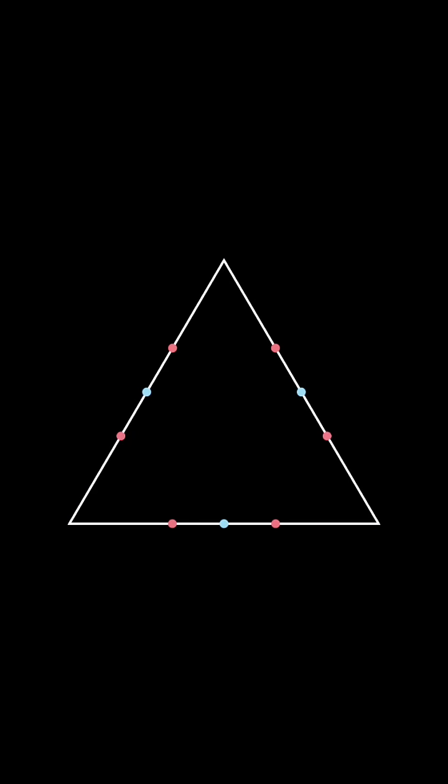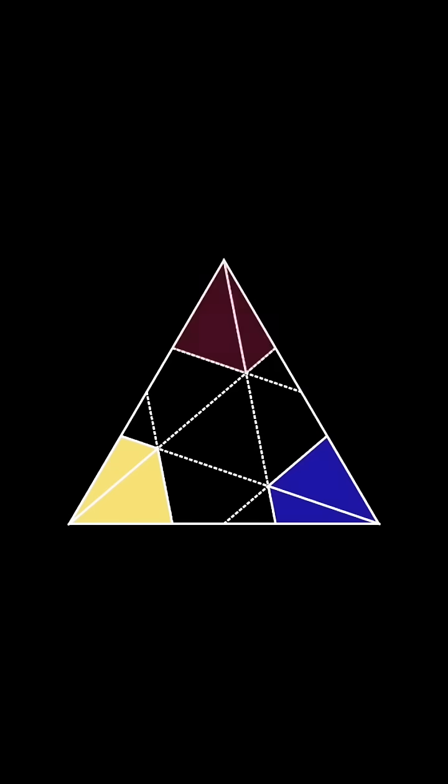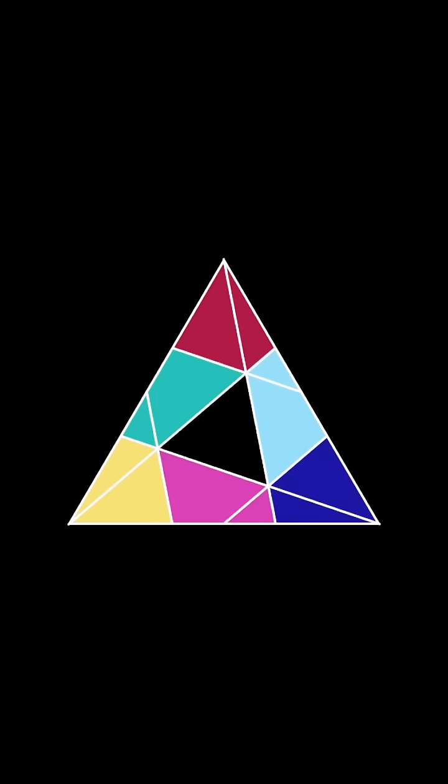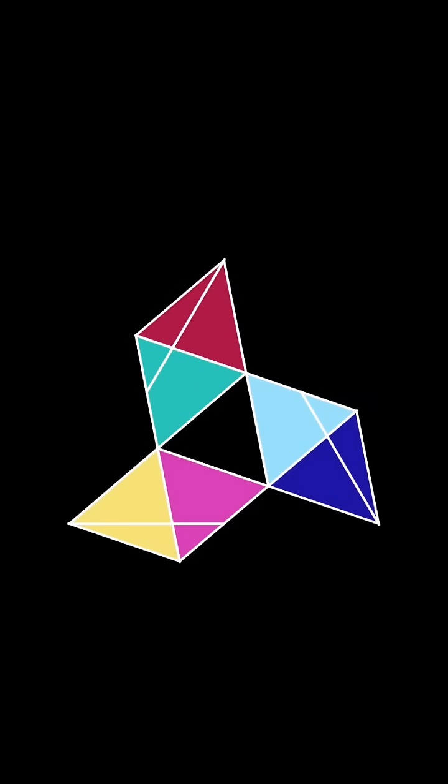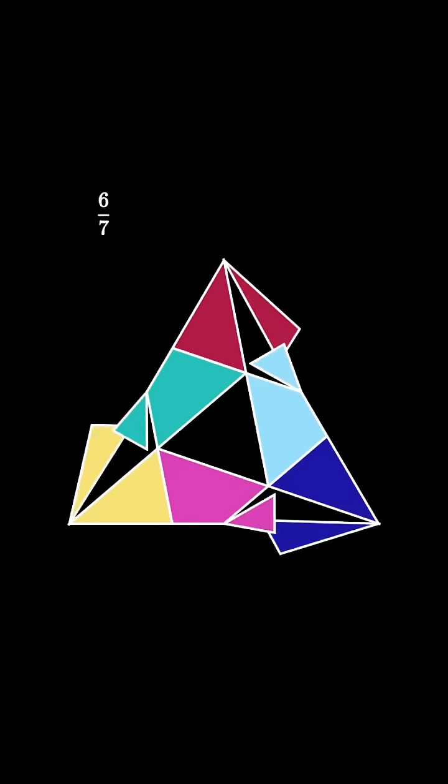Connect vertices to opposite trisectors like this, and connect the remaining trisectors to the midpoints. Each of these 6 shaded regions makes up exactly 1 7th of the triangle as you can see by rotating here. Therefore we've shaded 6 7ths of the triangle.